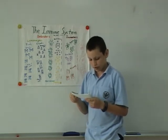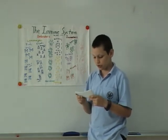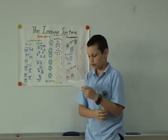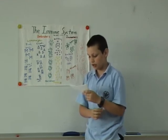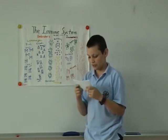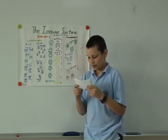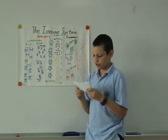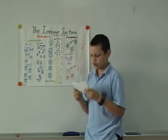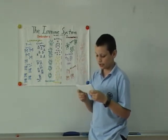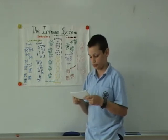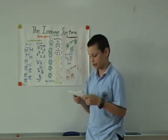Your lymph nodes are found in the neck, armpit, and groin. They contain cells that absorb dead tissue and harmful substances.